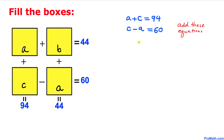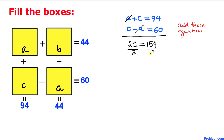Now let's add these two equations together. The A and negative A cancel out, leaving us with C plus C, which is 2C, equal to 94 plus 60, which is 154. Dividing both sides by 2, C equals 77.